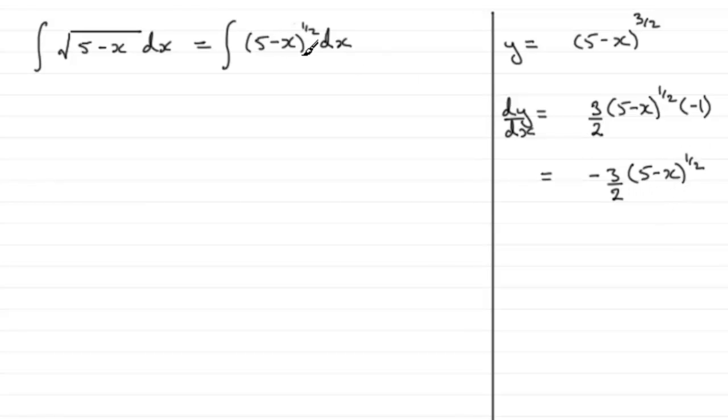So can you see this is looking very close to what we've got here? The only difference is that we've got a constant here, -3/2. Well, all we need to do—providing it's a constant, you can't do this if it's a variable—but we want to make this come out as just simply (5-x) to the power 1/2. So we would need to multiply this, let's just put this in square brackets, we would need to multiply this by -2/3. So if I was to put -2/3 in here, -2/3 multiplied by -3/2 gives us 1—one lot of (5-x) to the power 1/2, which is what we want.